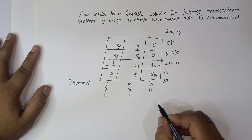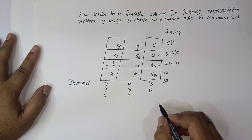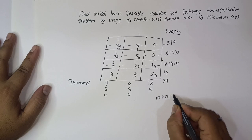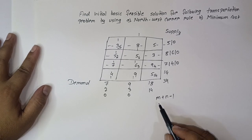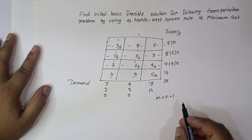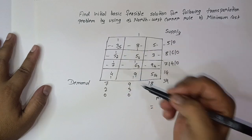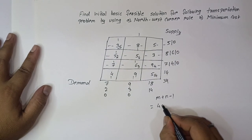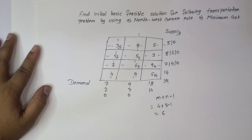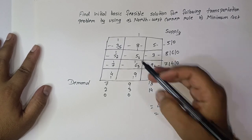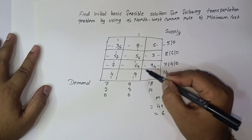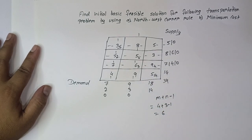We say we have a basic feasible solution if the number of allocations equals m + n − 1, where m is the number of rows and n is the number of columns. Here we have 4 rows and 3 columns, so 4 + 3 − 1 = 6. Let's check: counting our allocations — 1, 2, 3, 4, 5, 6. We have exactly 6 allocations.